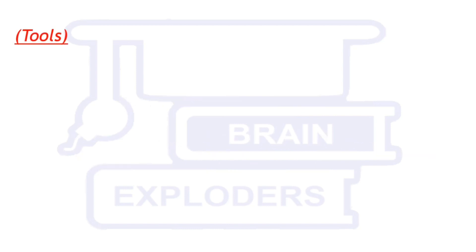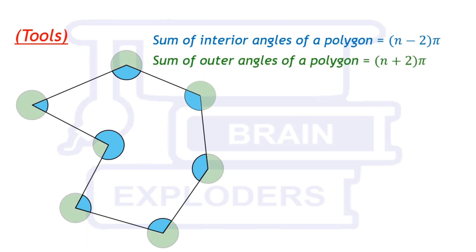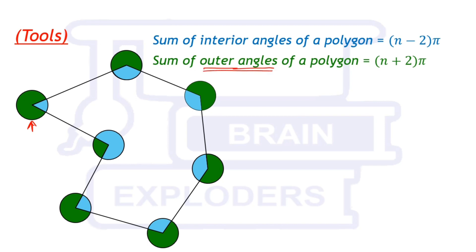Some tools we will use: the sum of interior angles of a polygon is equal to (n minus 2) times pi, where n is the number of sides. So the sum of the blue interior angles equals (n minus 2)pi. The sum of the outer angles of a polygon — the angles shown in green — is equal to (n plus 2) times pi. We will use these two results as tools in our proof.